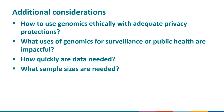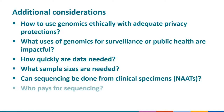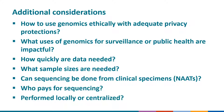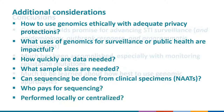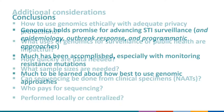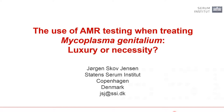To expand the reach of genomics in surveillance, targeted sequencing directly from clinical specimens rather than culture will likely be necessary. Investigators are working on this for T. pallidum, C. trachomatis, and Neisseria gonorrhoeae. Another question is who pays for sequencing, which may influence how much it can scale up. Currently, sequencing and analysis are largely centralized among academic researchers and CDC. In conclusion, genomics holds promise for advancing STI surveillance and epidemiology, outbreak response, and programmatic approaches. Much has been accomplished, especially in monitoring resistance mutations, but there's still much to learn about best use of genomics for STIs. Thank you.